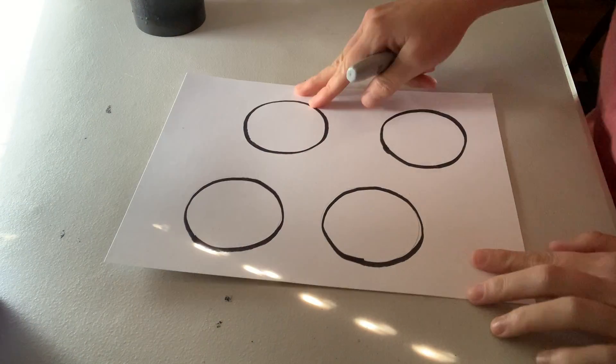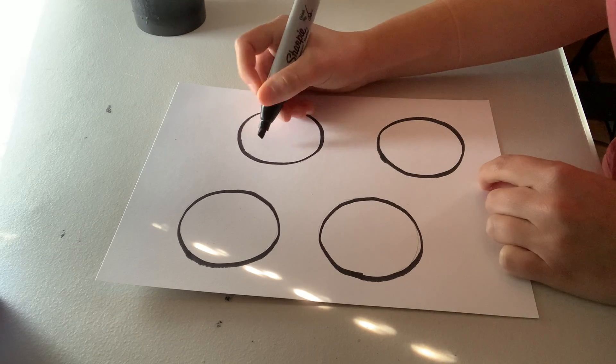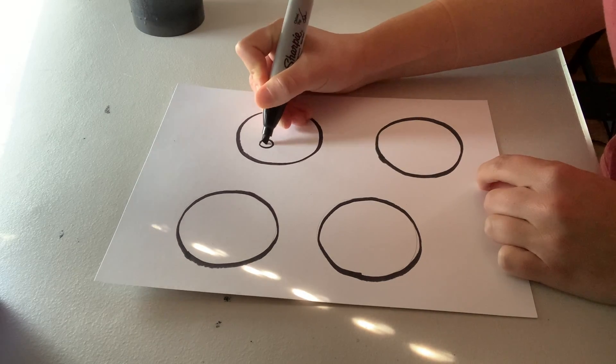Now you get to be creative. You are going to make each dot a different character by drawing a face and using some of the lines to create hair.